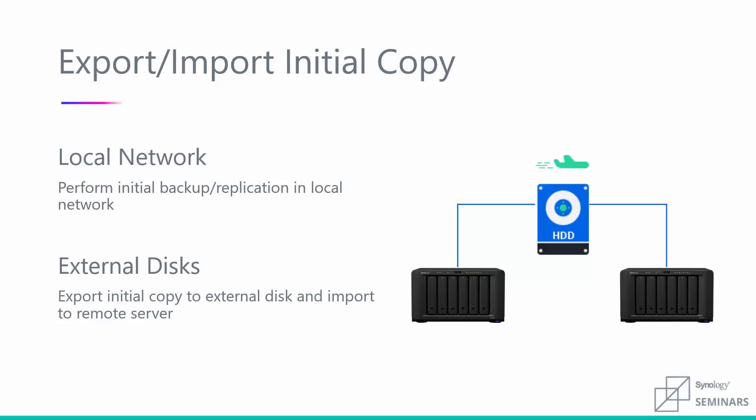Another very easy way to do this is to export onto a hard drive. In that 2 terabyte example, you could connect a 2 terabyte USB hard drive, export the data onto that drive, ship it to the off-site location, copy it onto that secondary unit, and then relink the backup task. Let me jump into a demo and show you exactly what that looks like and just how easy it is to get that data off-site.